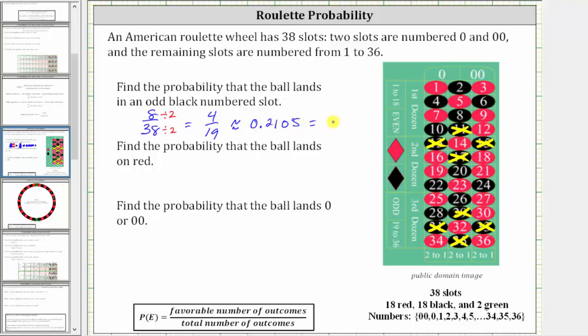Which would give us 21.05%. So the 4/19ths is the exact probability. These two have been rounded.